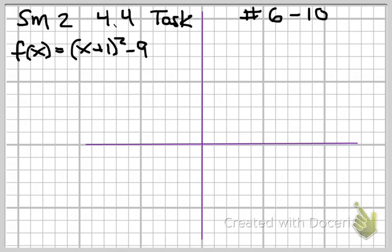Okay, so where's my vertex of this parabola? Vertex would be at negative 1, negative 9. And what does A equal? A equals 1. So, vertex, negative 1, negative 9.